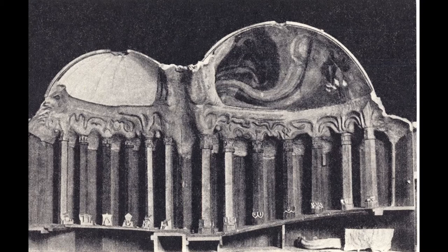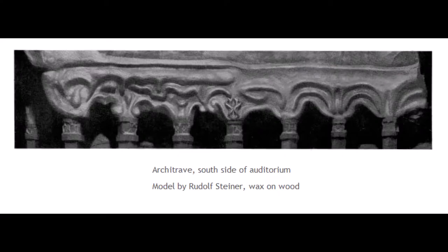The auditorium is surrounded by three levels of sculptural processes. In the bases, the metamorphosis simply rises and then falls. In the capitals, it is more complex, with the mutual transformation of a force from above and a force from below. In the architrave, the forces flow sideways as well. The successive stages are less clearly articulated.